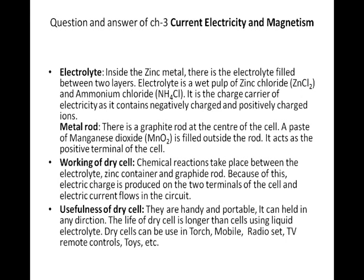Working of the dry cell: a chemical reaction takes place between the electrolyte, the zinc container, and the graphite rod. Because of this, electric charge is produced on the two terminals of the cell and electric current flows in the circuit. Usefulness of dry cell: they are handy and portable, can be held in any direction. The life of a dry cell is longer than cells using liquid electrolyte. Dry cells can be used in a torch, mobile, radio, TV, remote controls, toys, etc.